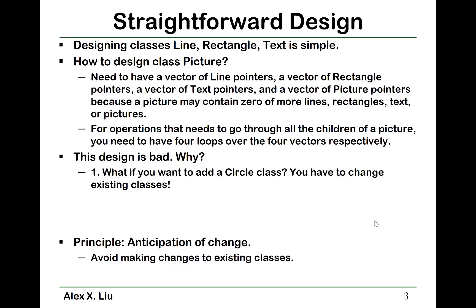For operations that need to go through all the children of a picture — for example, printing out this picture — you have to print out every component in this picture. So you need a loop over all the line pointers, a loop for all the rectangle objects, a loop over all the text objects, and a loop over all the picture objects. You are going to have four loops over four vectors respectively.